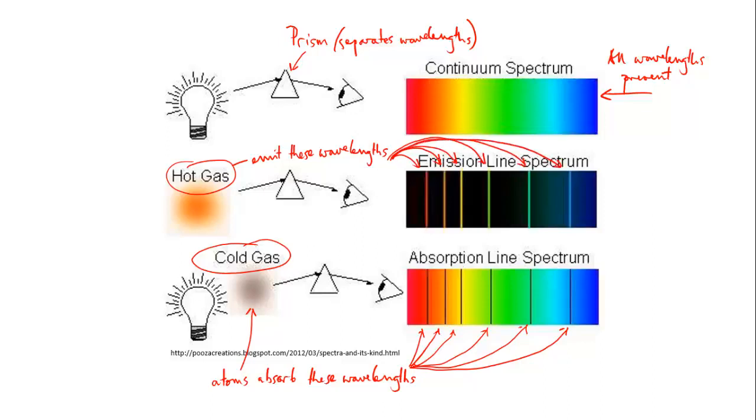And the key thing is that for a given element, the black lines in the absorption spectrum and the bright lines in the emission spectrum are at exactly the same wavelengths, as you can see by looking at the two spectra here.